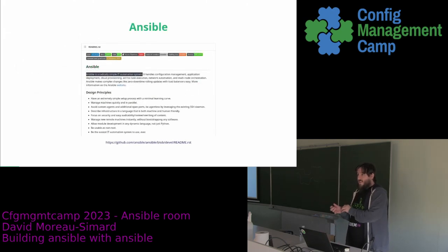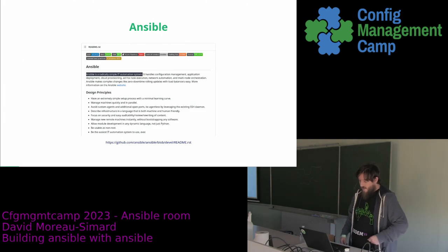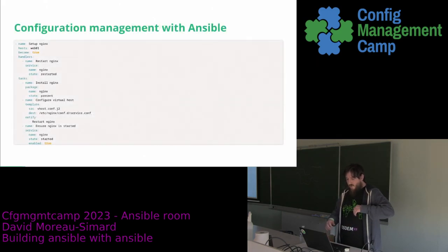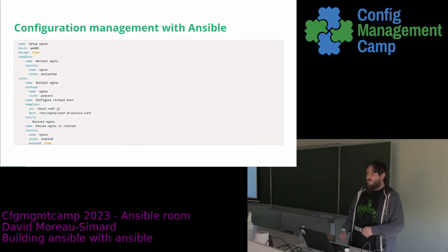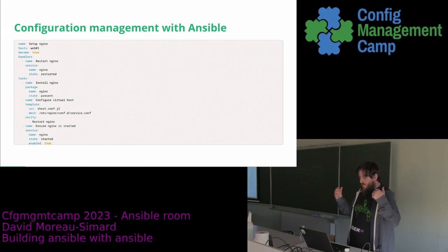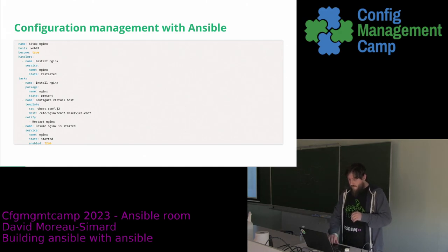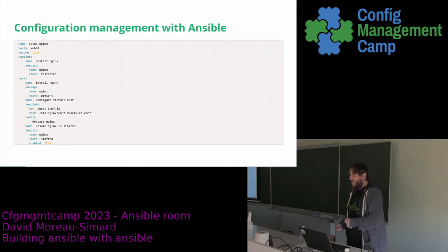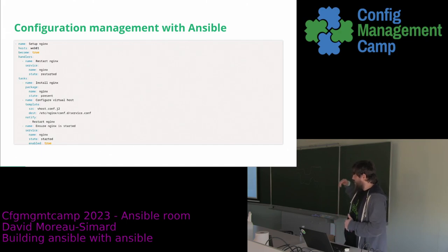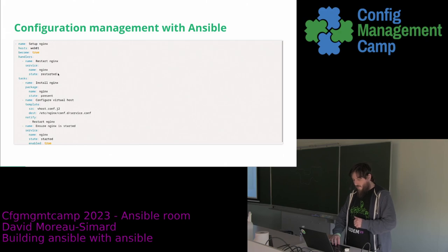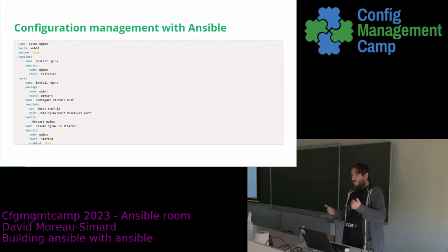I won't bore you with what Ansible is, because if you've been here all day you probably know what it is. Radically simple IT automation system. You tend to use Ansible to do configuration management. In this example, it's a simple playbook — it installs Nginx, sets up a vhost config for Nginx, and then ensures that Nginx is started. What's cool about this is we have a handler here. So if my vhost configuration changes, it will automatically restart. Typical configuration management with Ansible — you've probably done something like this.